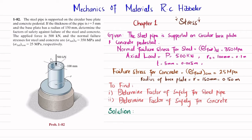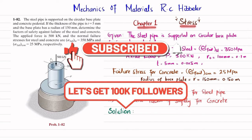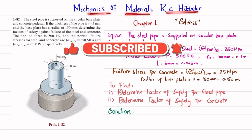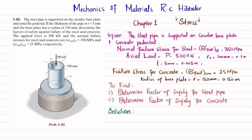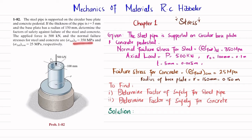Welcome back. In this video we are going to solve problem 1-82, taken from chapter 1 on stress. The book is Mechanics of Materials by RC Hibbeler. The steel pipe is supported on a circular base plate and concrete pedestal. The thickness of the pipe is 5 millimeters, the base plate has a radius of 150 millimeters, and the applied force is 500 kilonewtons.